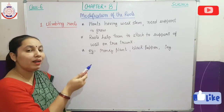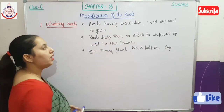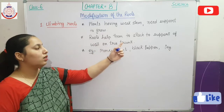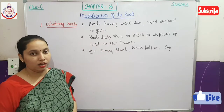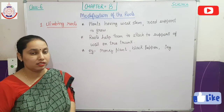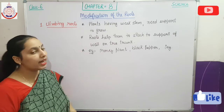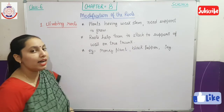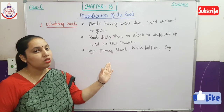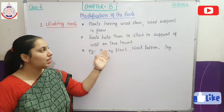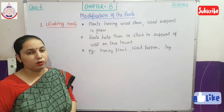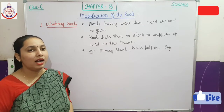Which plants have climbing roots? Plants with very weak stems need support to grow. The roots help them attach to a wall or a tree trunk. Examples of plants with climbing roots are money plant, black pepper, and ivy. Money plant has a very weak stem, so it needs support from a wall, a trunk, or anything similar. That is why the type of root in money plant is a climbing root.